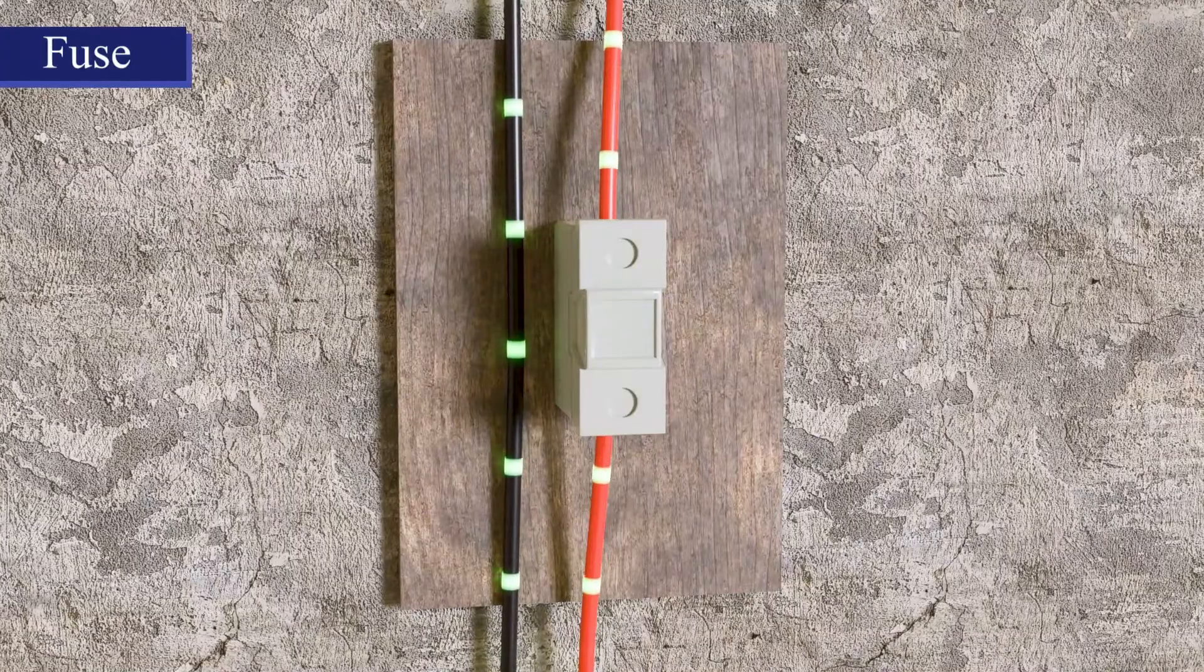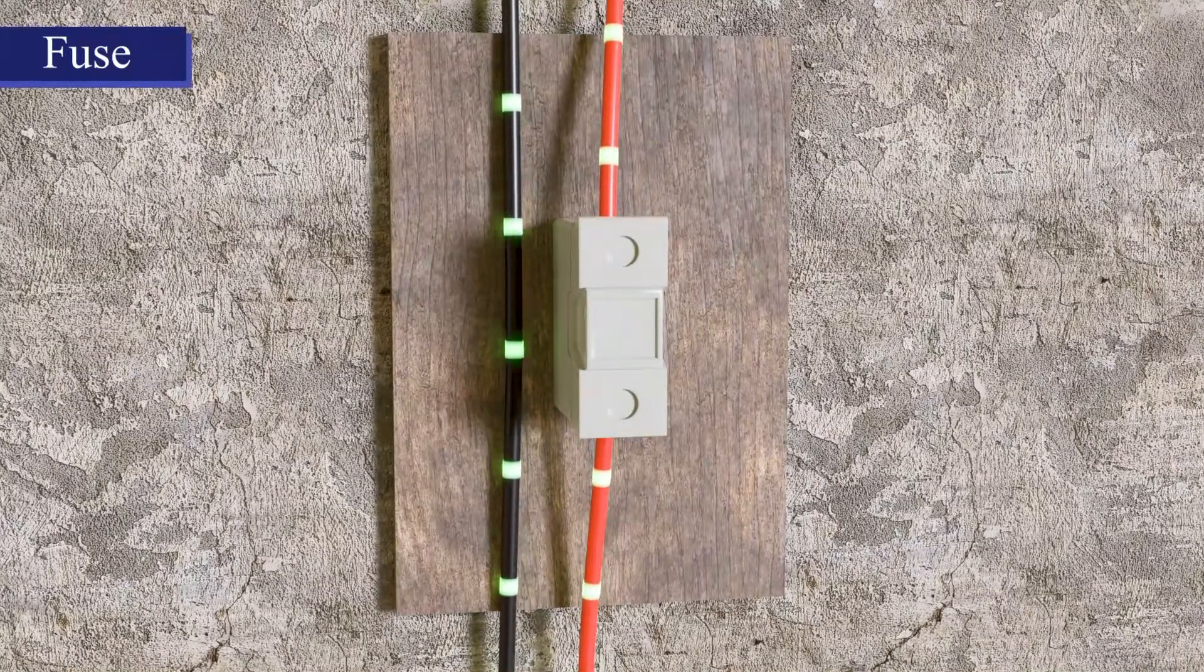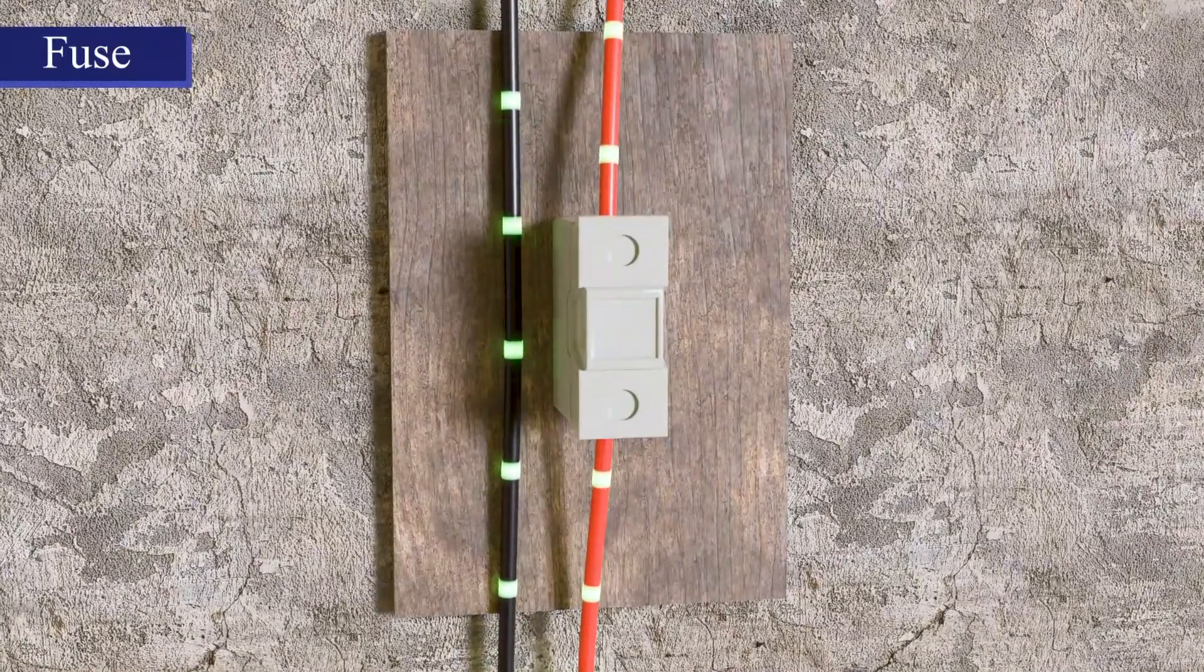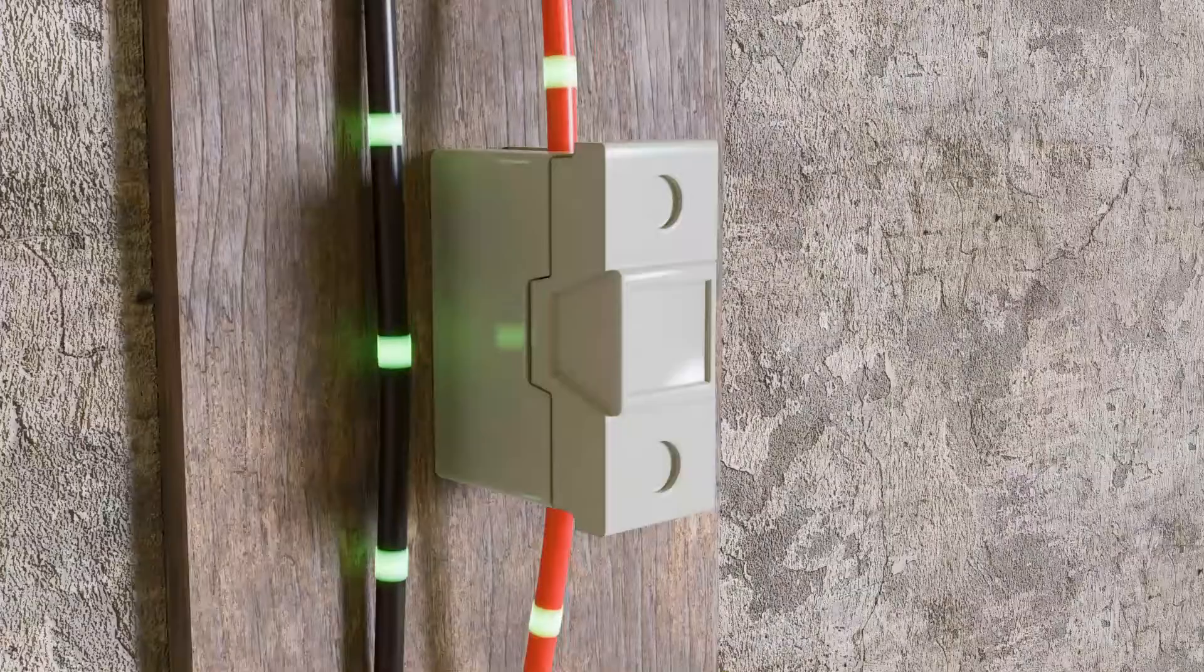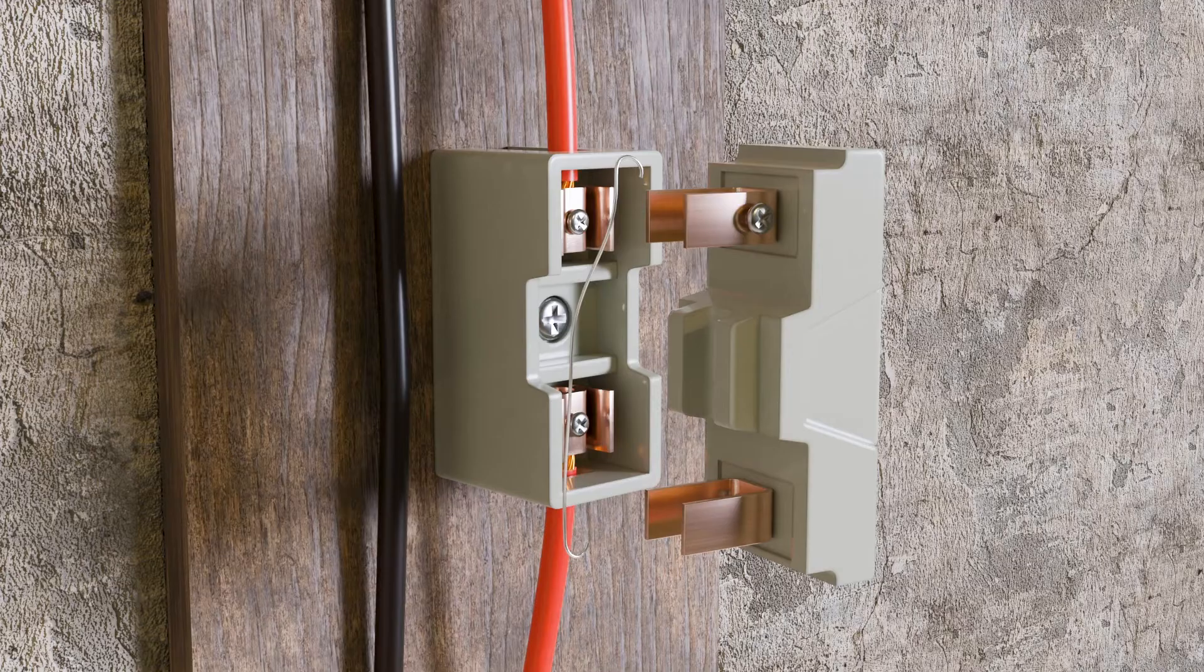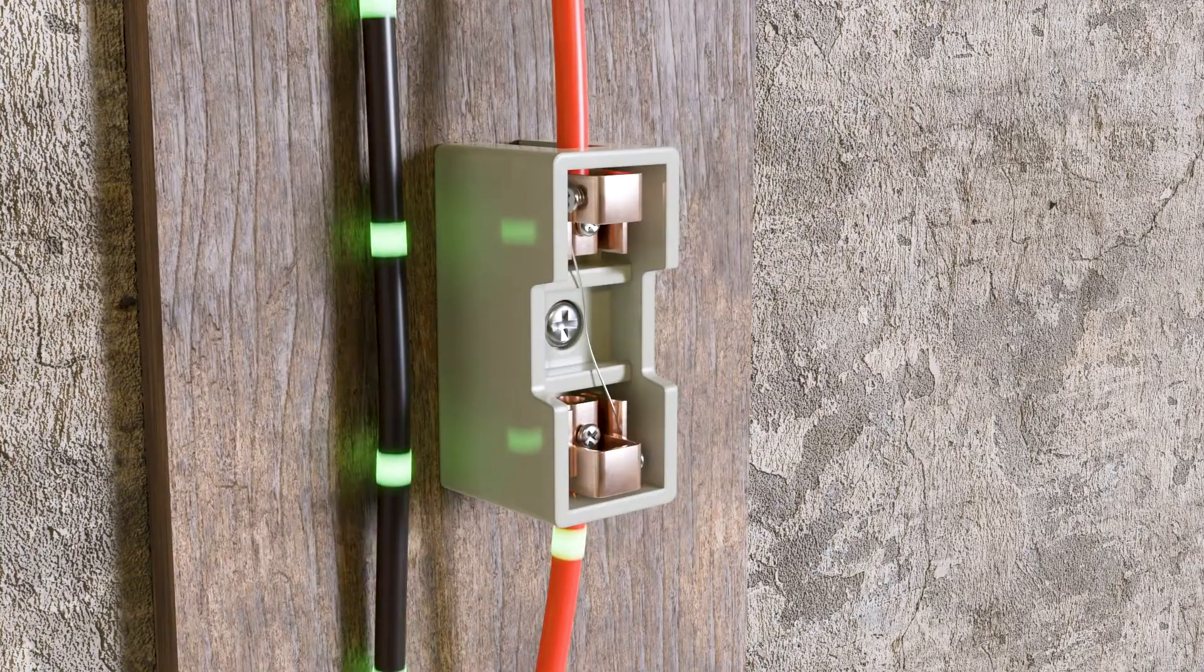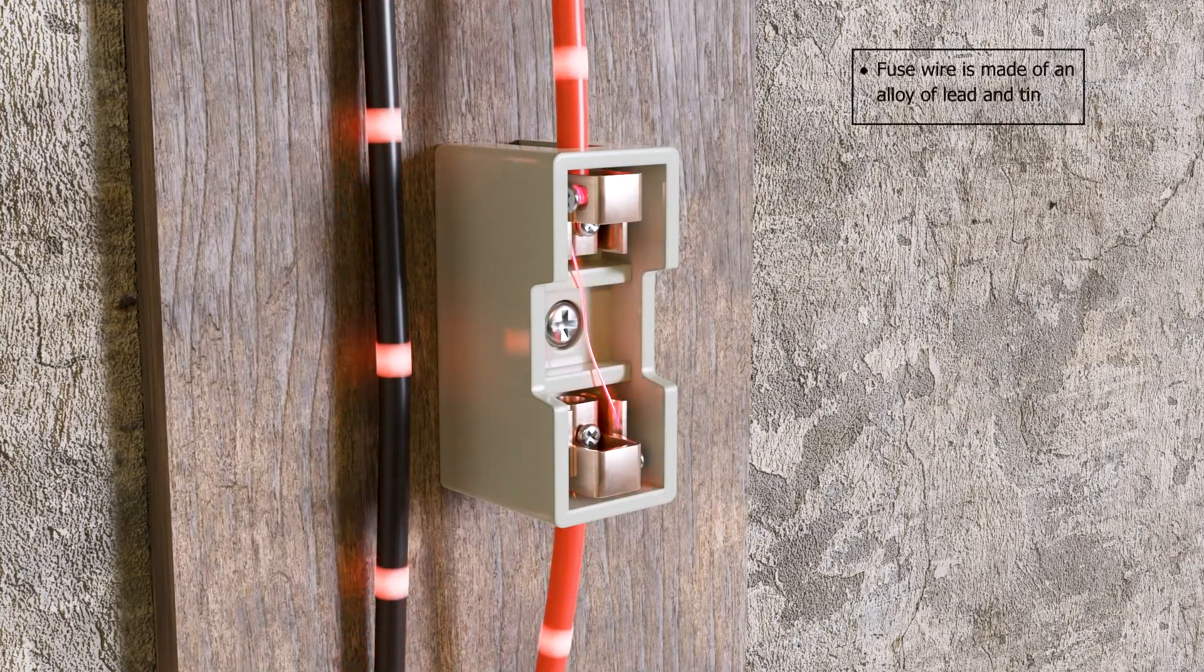In earlier days, a much simpler device known as electric fuse was used to protect electrical systems from overloading and short circuit. A fuse is made of a wire that uses a metal alloy with a low melting point. When the current in the system exceeds the recommended value, it generates excessive heat in the fuse wire.